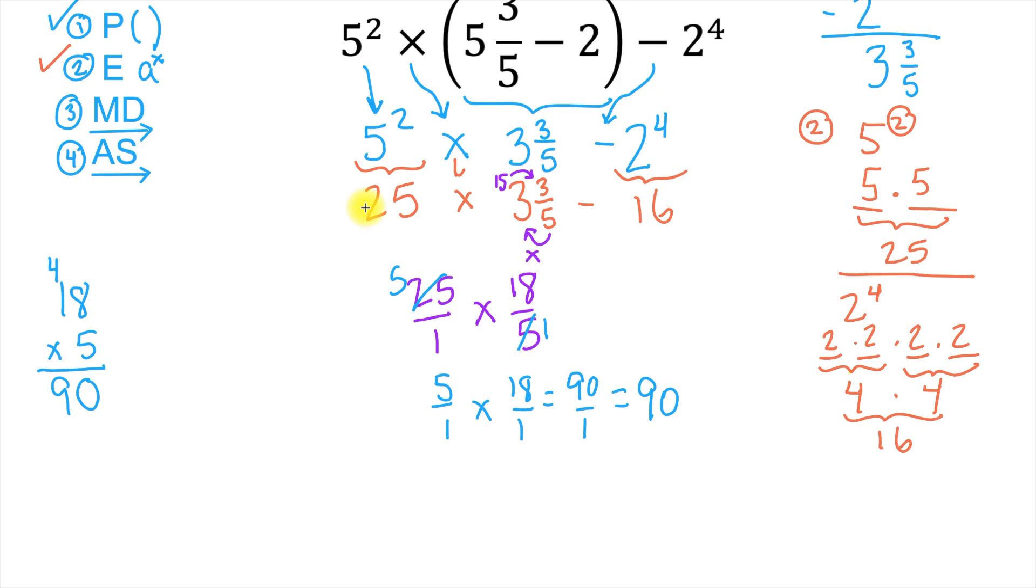So I now know that this multiplication, 25 times 3 and 3 fifths, will give me 90. So now what I can do is I can just write that as being 90. And I know there's a little extra work here, so I want to be extra neat. So I'm just going to show it like this. 25 times 3 and 3 fifths. That gives me 90. And then I'll bring down what I haven't used yet, which is my minus 16. So now, do you see any other multiplication or division in our expression? No. We're done with that.